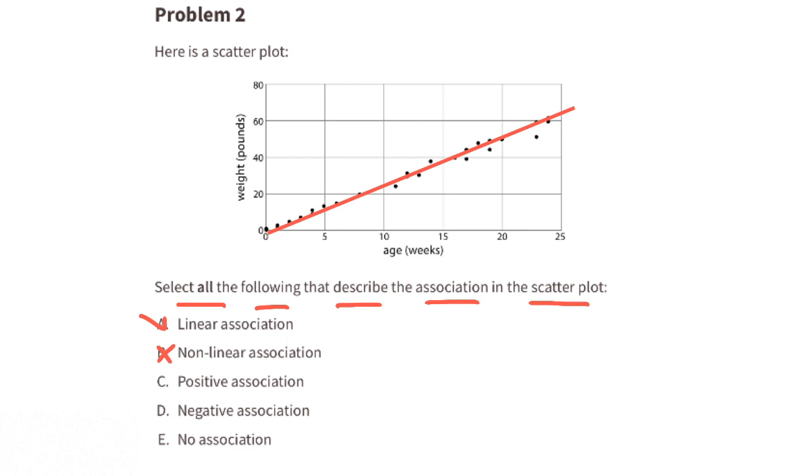As the weeks increase the weight also increases. That's forming a positive slope so it does have a positive association so we can select C, which means we won't select D, negative association.